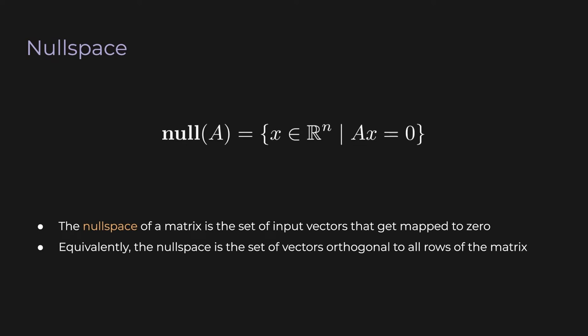Let's move on to a different but closely related topic: the null space. The null space of a matrix is the set of input vectors where A times the vector is 0. You can think of it as the matrix A taking all the vectors in the null space and sending them to the zero vector in the output space. Equivalently, you can think of the null space as the set of vectors orthogonal to all rows of the matrix, since matrix multiplication is the dot product of the matrix rows with the input vector.